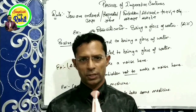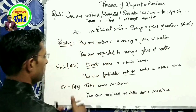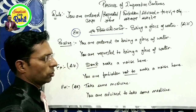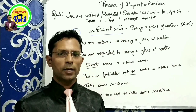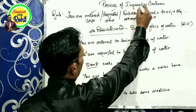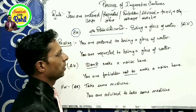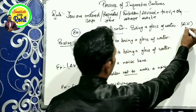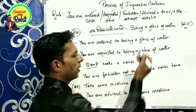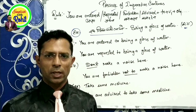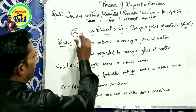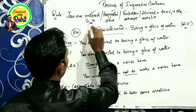Now if we want to make the Passive Voice of Imperative Sentences, how do we do it? We will learn in both Hindi and English. Consider this sentence: 'Ek glass pani lao' — bring a glass of water. This is an order given to someone. In Active Voice it is: Bring a glass of water. But this is not Passive Voice yet.